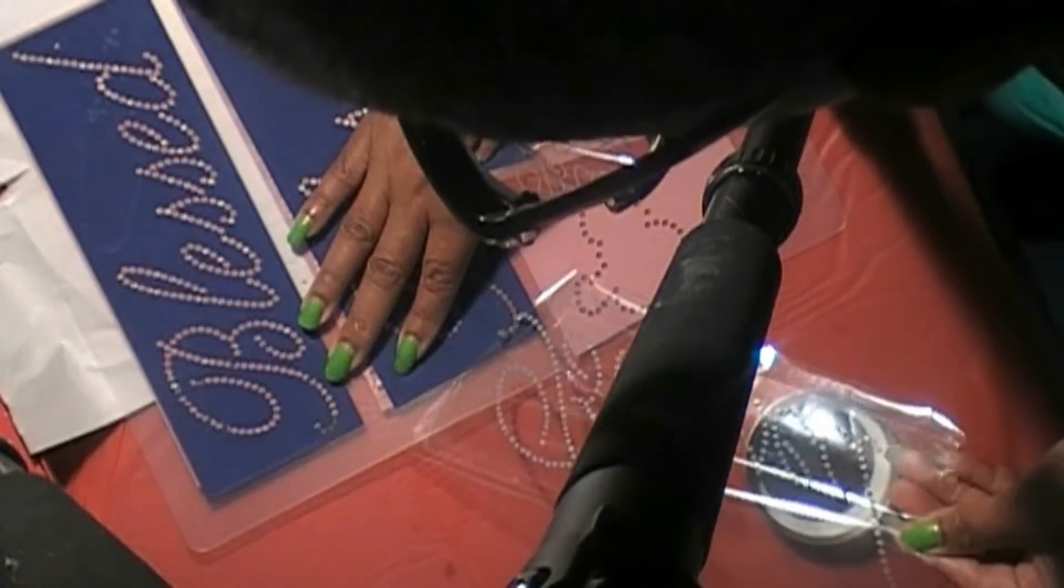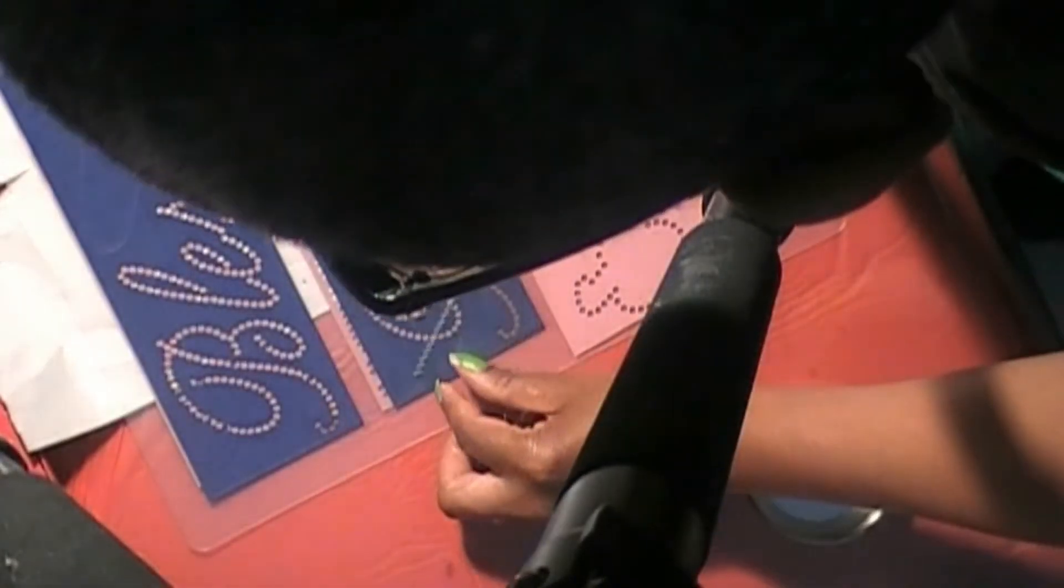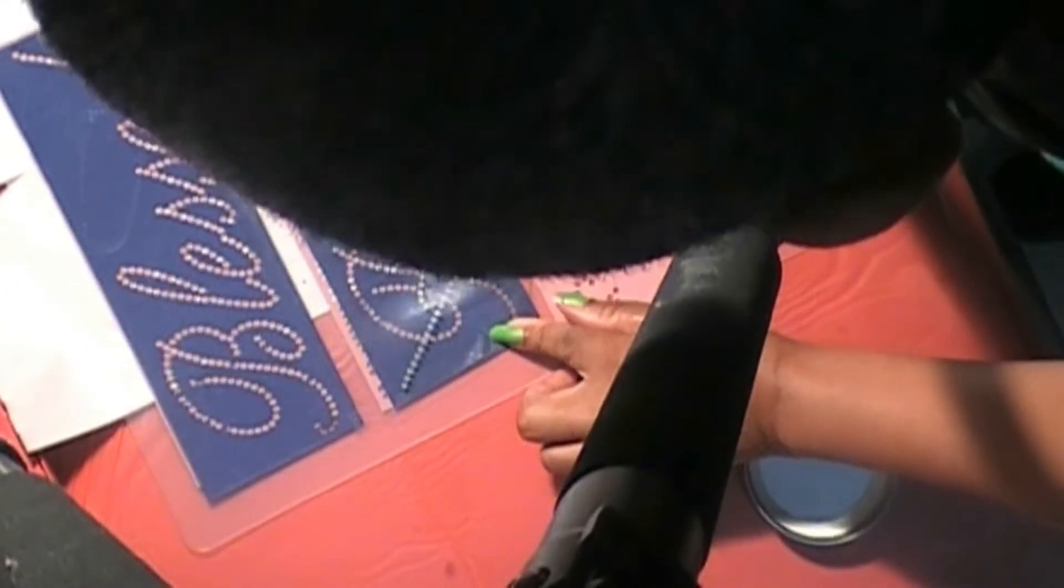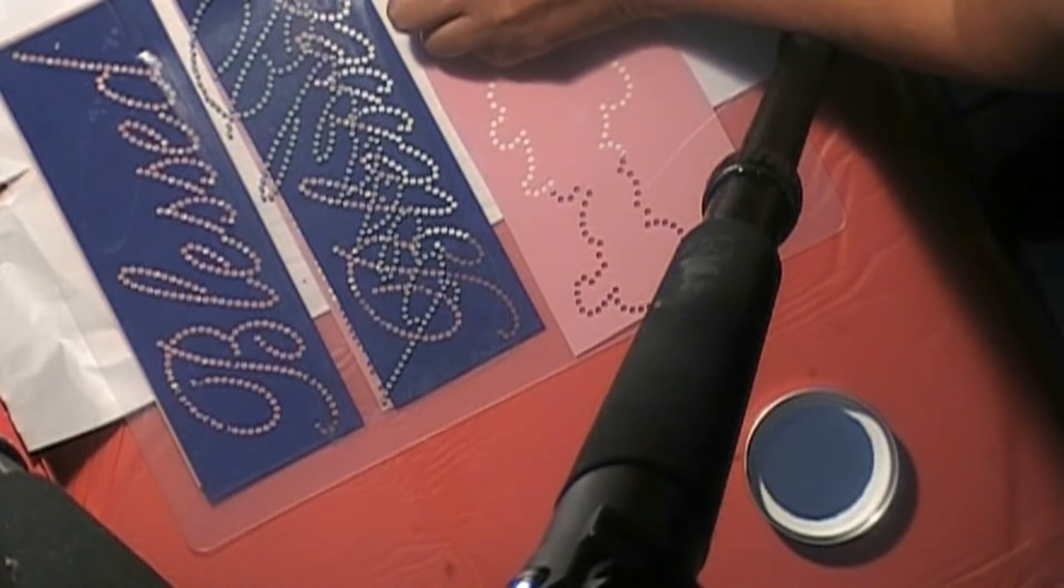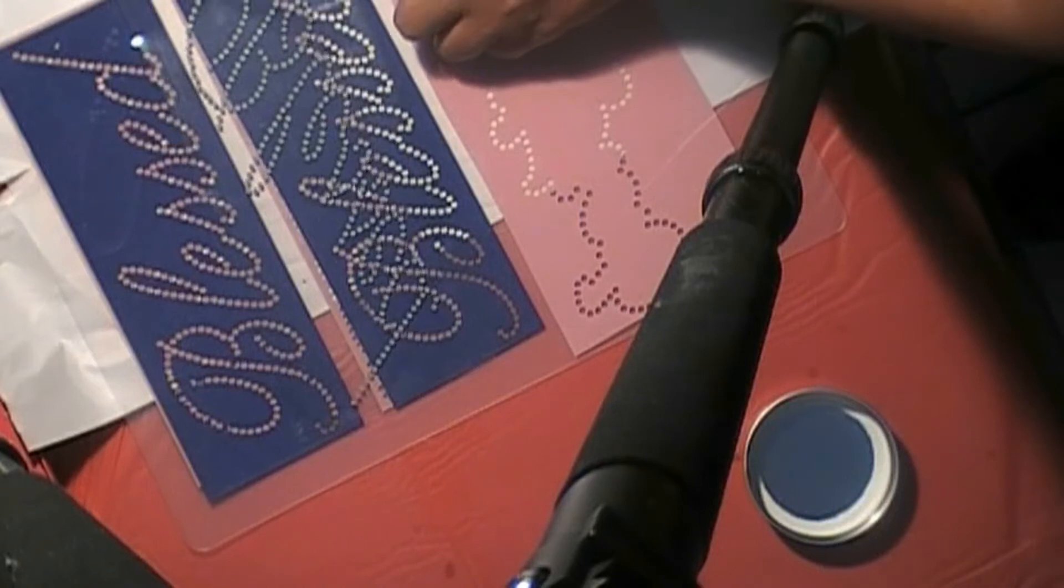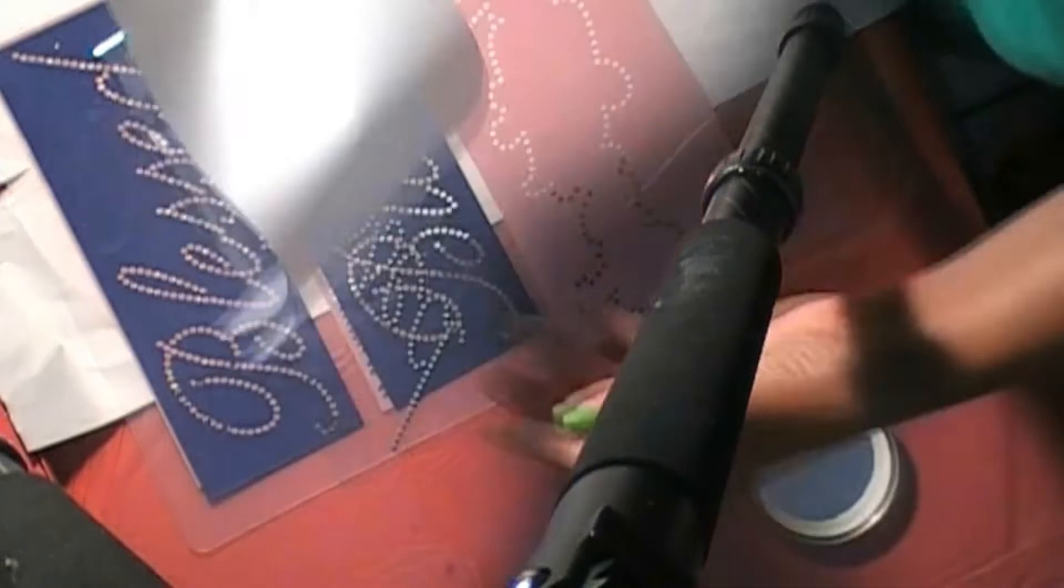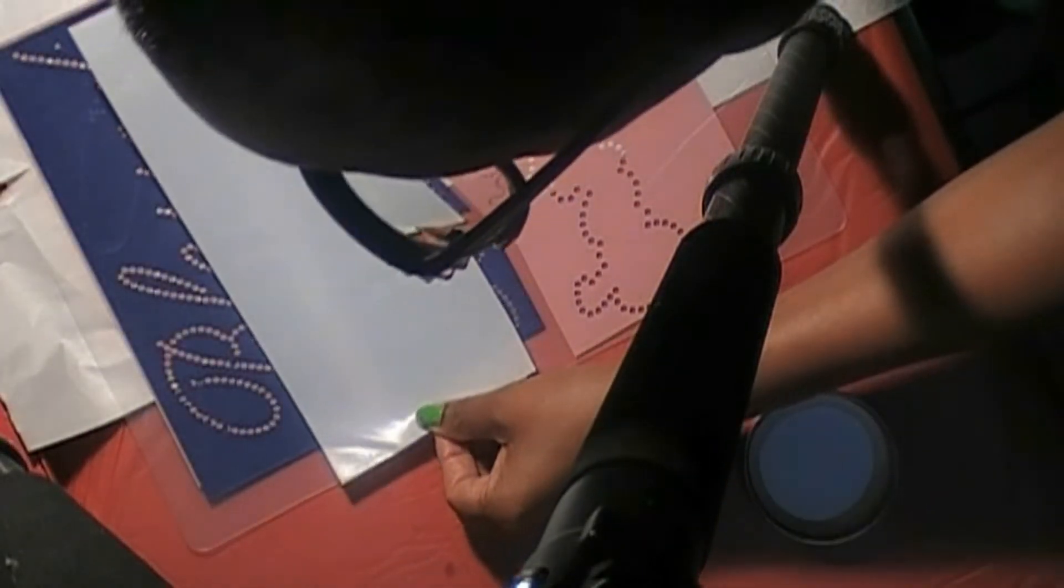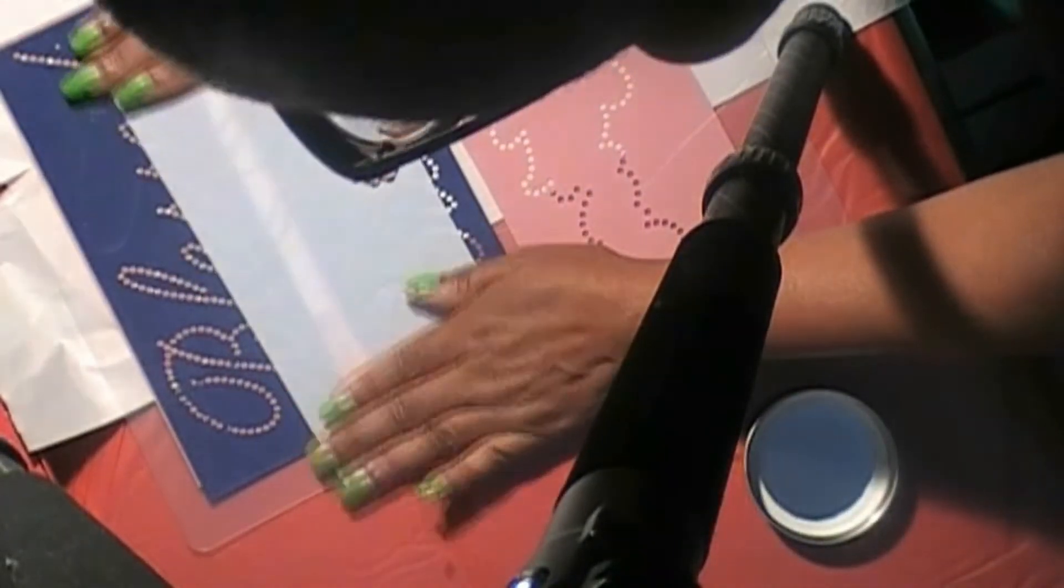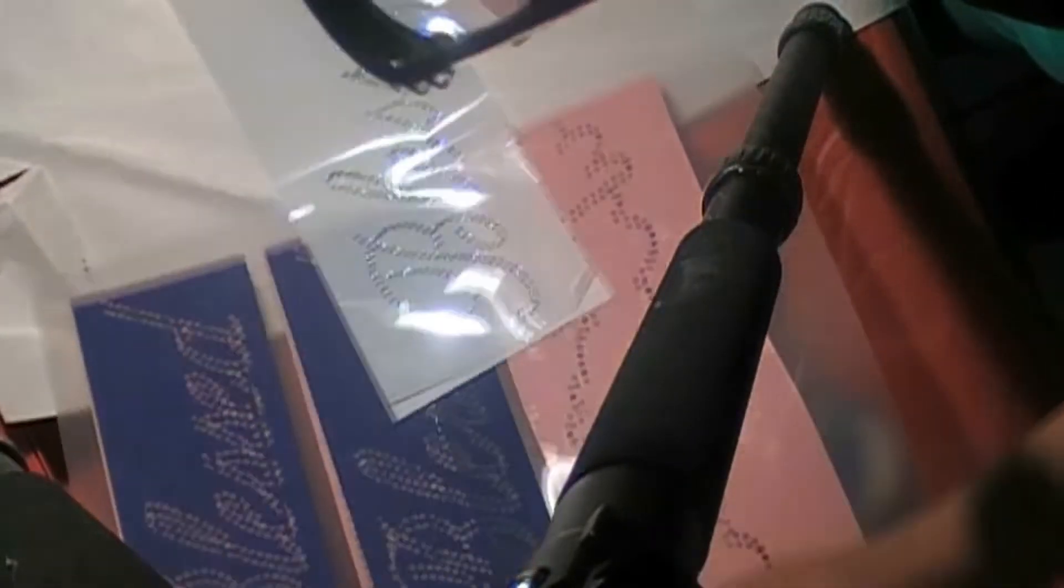Almost there, almost at the finish line. I'm gonna turn the transfer tape on its back. Let me see if I can straighten out this corner, the transfer tape wanted to curl up on me. So I'm gonna take the rough side of the backing and place it on the back of this and then I smooth it out so that the backing can stick to the tape and that is my rhinestone transfer.